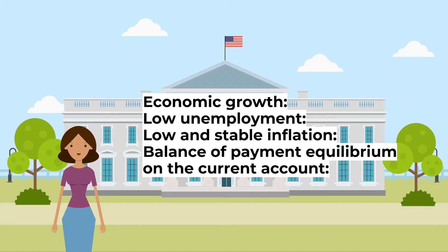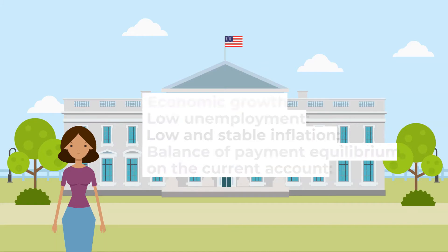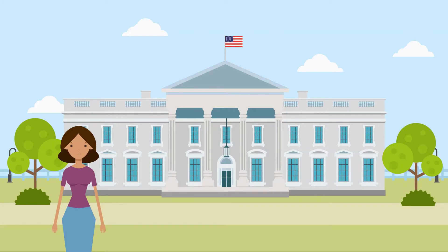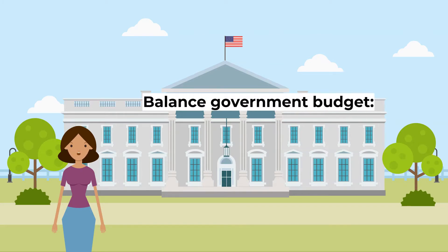The fourth objective is balance of payments equilibrium on the current account. This is important to allow the country to sustainably finance the current account, which is important for long-term growth. There are also some other macroeconomic objectives, for instance to balance the government's budget. This ensures the government keeps control of state borrowing so the national debt does not escalate.